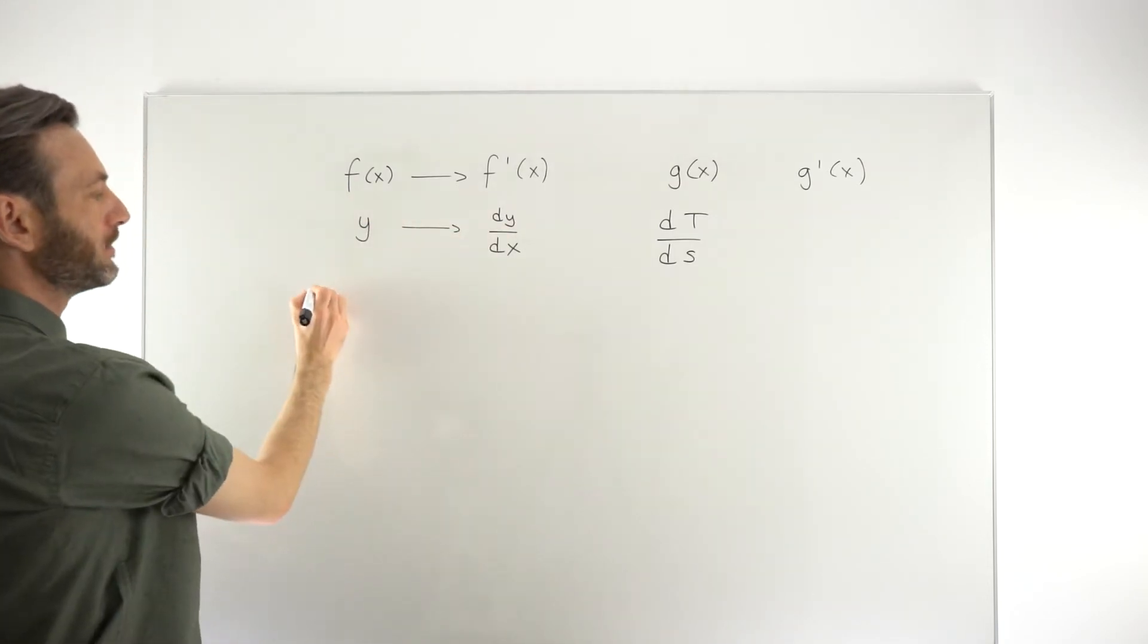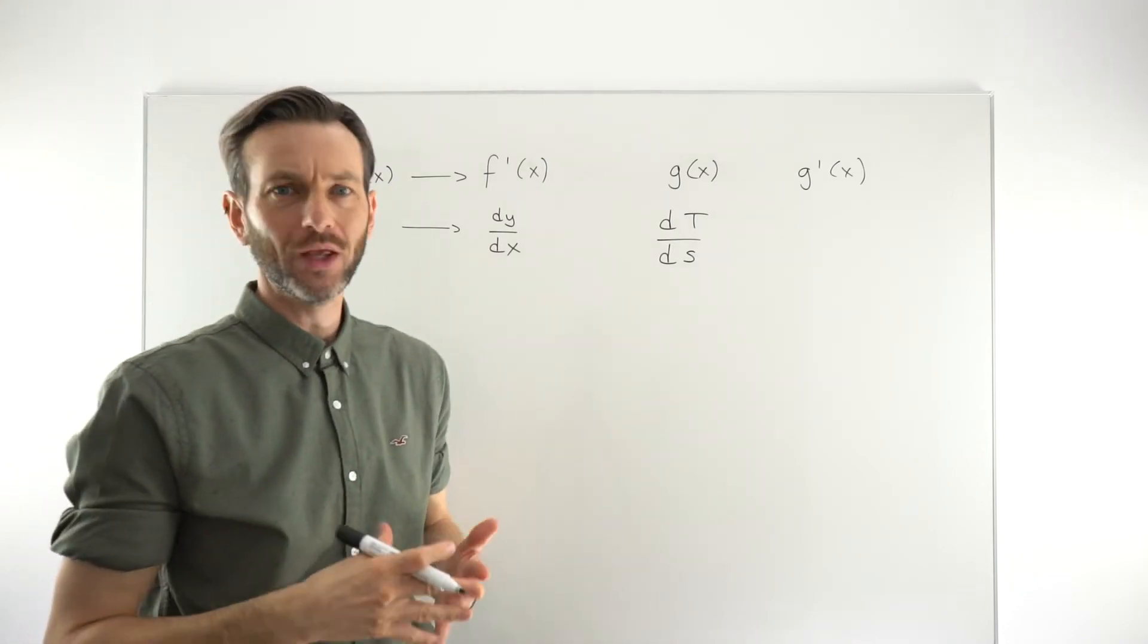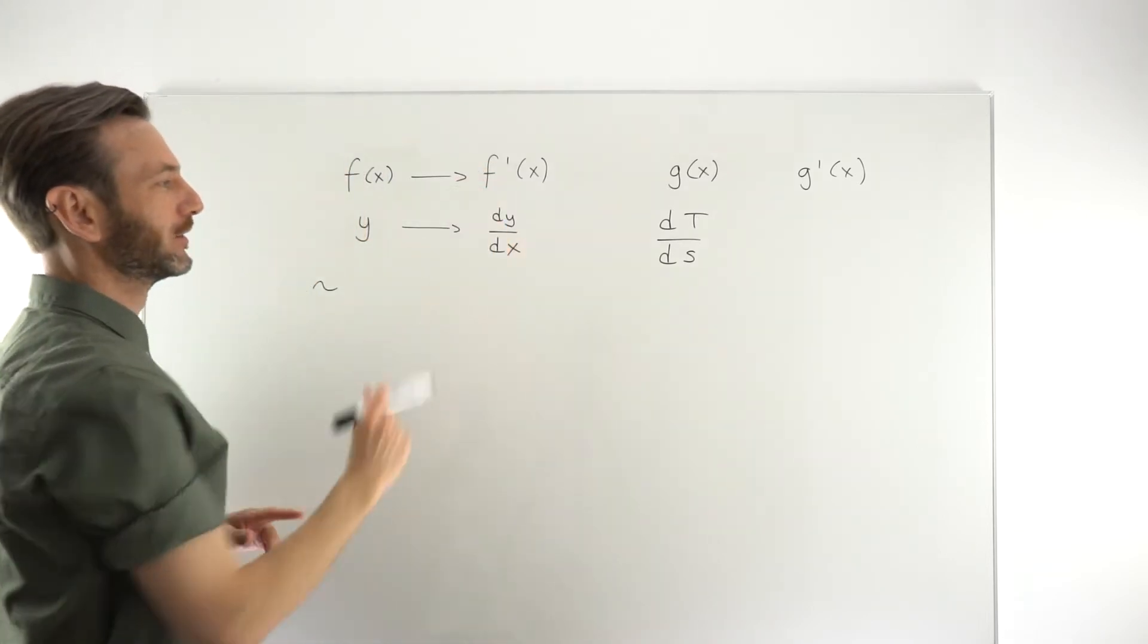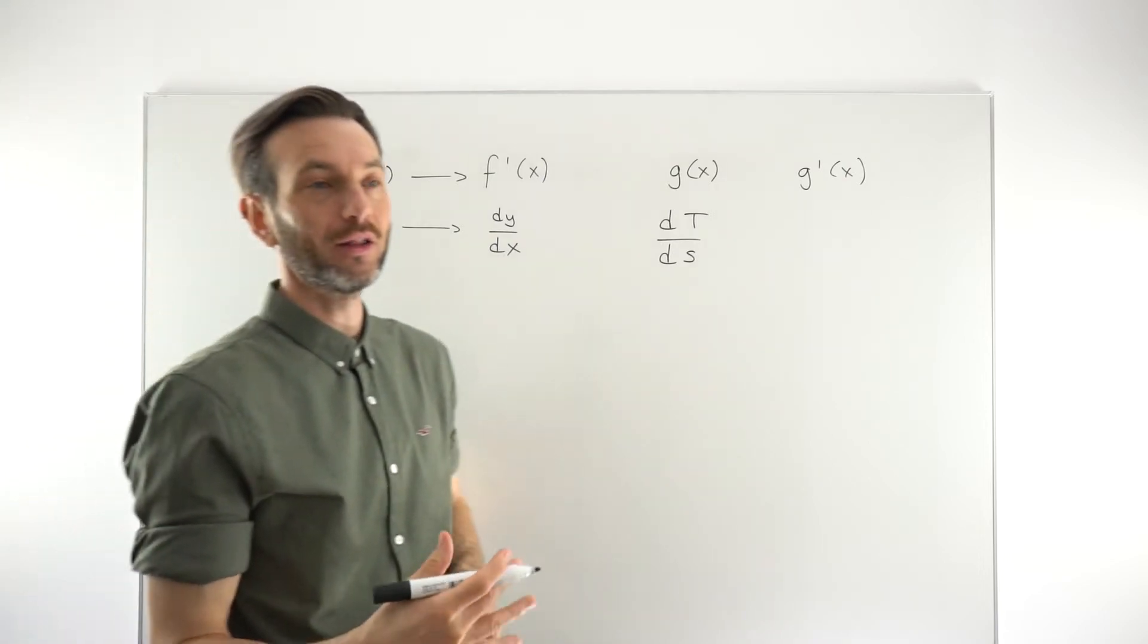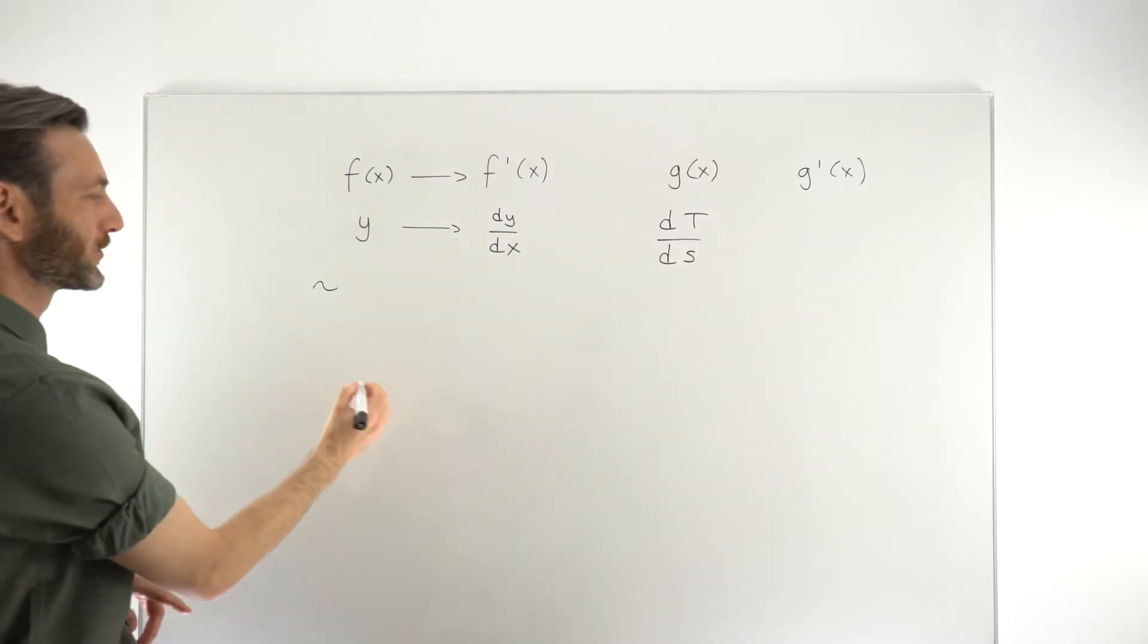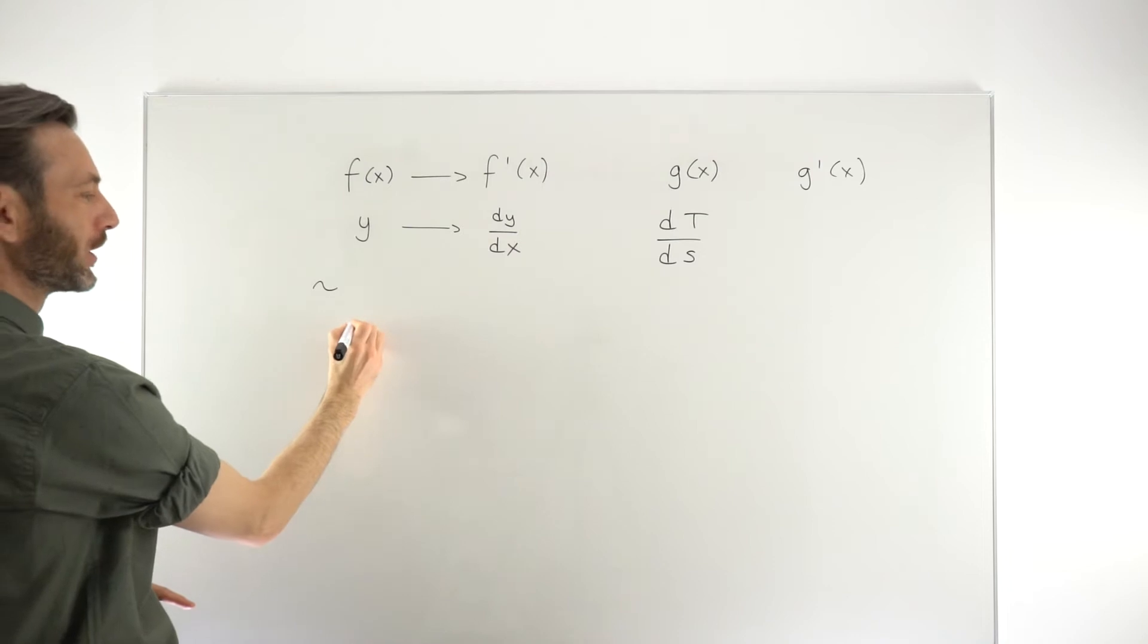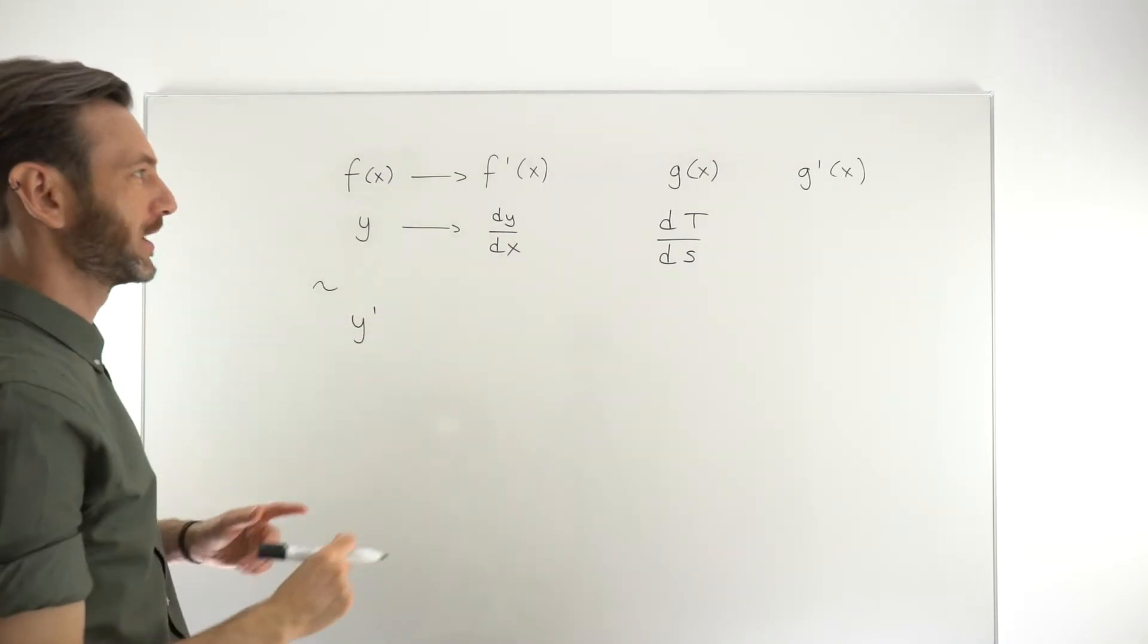So some variations you may see on this, just to make you aware of those in case you do see them and you think, what's going on there? I thought there was only two ways to define the derivative. So one variation that teachers tend to use, particularly if they're going very quickly through a question, is to kind of combine these, actually. It's sort of a shorthand thing where they'll just say y dash or y prime to represent the derivative.